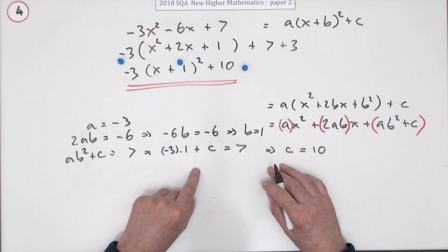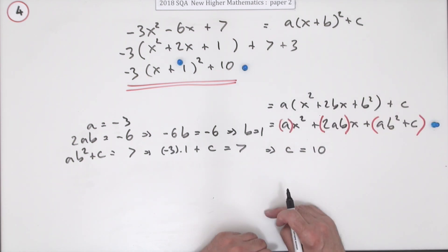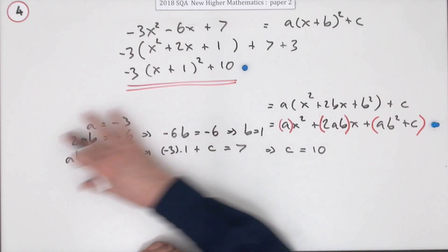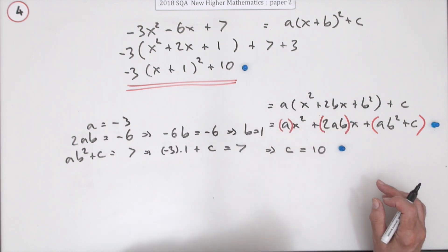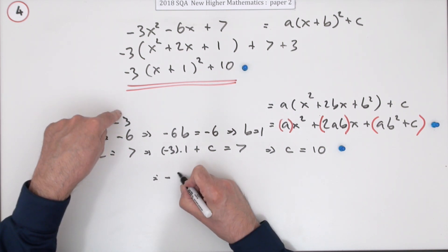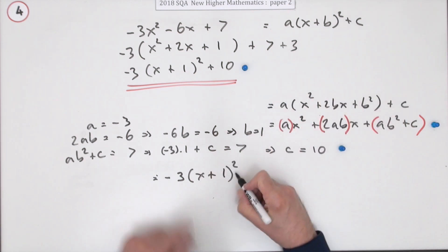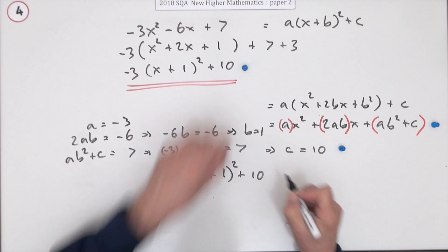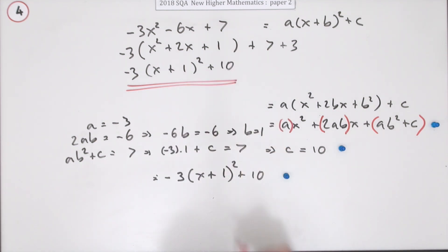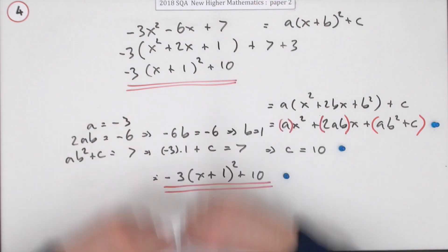But doing it this way, you get the first mark for expanding this side. You only get one mark for all of this, finding those three values, and the last mark's when you finally put it all together. So it equals A, negative 3, times x plus B, 1 squared, plus C, which was 10. Then you get the last mark. Simple test. That's the better one. Less ink on the paper.